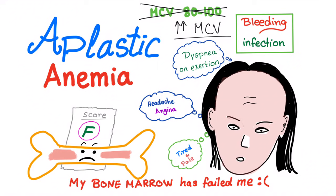Aplastic anemia — basically your bone marrow has failed. So you have symptoms of anemia: tired and pale, pale and tired, headache, angina, murmur, dyspnea on exertion. Those are normal symptoms of anemia. Also, since aplastic anemia will have pancytopenia, you'll get some bleeding and some infection — due to low platelets and low white blood cells.